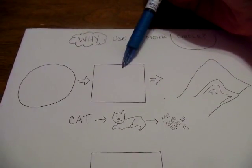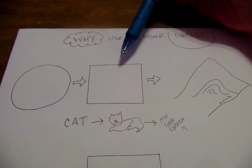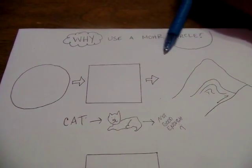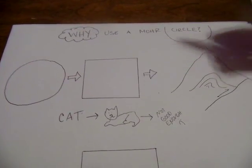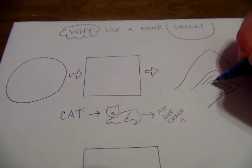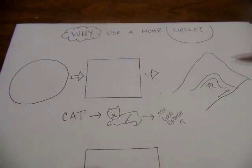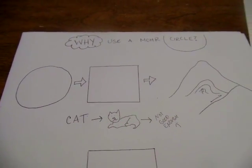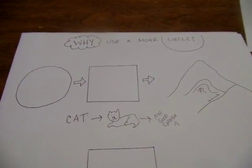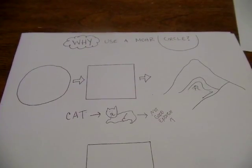So a Mohr circle is a representation of a block diagram, and we use that block diagram to represent what a rock is feeling in terms of stress at some point in a real situation.